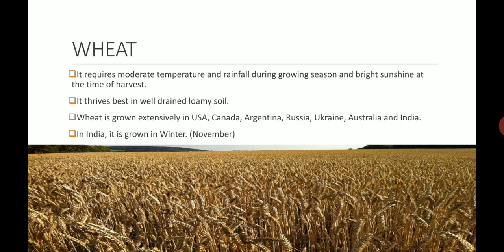Let's talk about wheat. It requires moderate temperature to grow and moderate rainfall during the growing season, and bright sunshine when harvest time comes. Wheat is also one of the major food crops all over the world. It grows well in well-drained loamy soil. Wheat is grown extensively in USA, Canada, Argentina, Russia, Ukraine, Australia and India. In India it is sown in the winter season starting November and harvested during March and April.